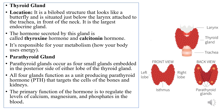At the neck region, the two important glands present are the thyroid gland and the parathyroid gland. The thyroid gland is located at the neck region and is a bi-lobed structure that looks like a butterfly. As you can see in the diagram, the thyroid gland looks like a butterfly with two lobes. It is situated just below the larynx and is attached to the trachea at the front of the neck. It is the largest endocrine gland.